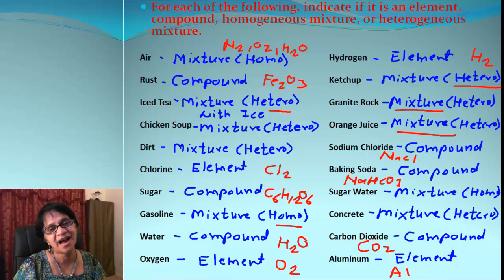And aluminum, it's just Al, which is an element. So you got it. You can easily identify any type of matter into an element, mixture, and compound. And you also know if it's a mixture, what kind of mixture you got.